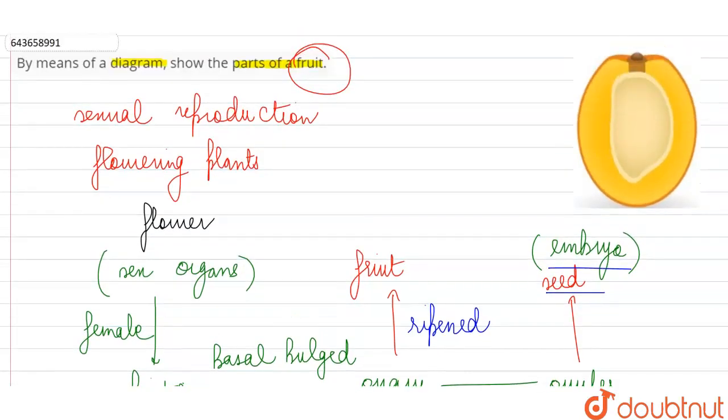So the fruit wall or the pericarp can further be divided into three parts. So let's see what these three parts of the fruit wall are. In this cross section of a fruit, here a typical fruit like mango has been shown.